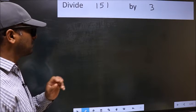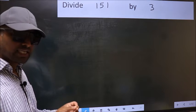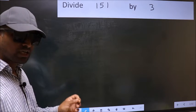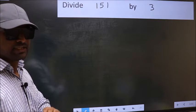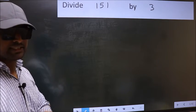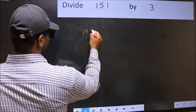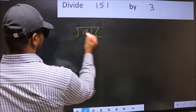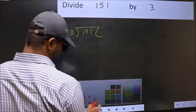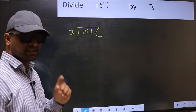Divide 151 by 3. While doing this division, many do this mistake. What is the mistake that they do? I will let you know. But before that, we should frame it in this way. 151, 3 here. This is your step 1.